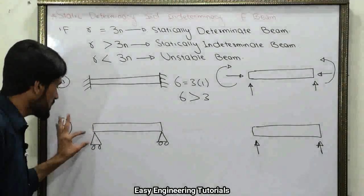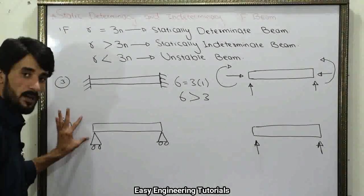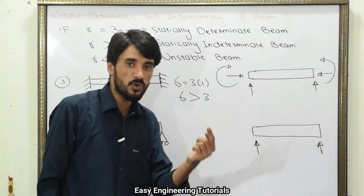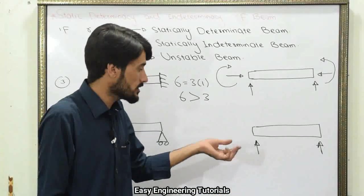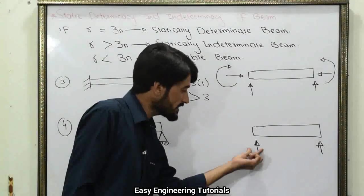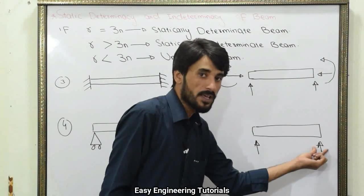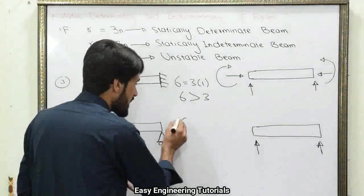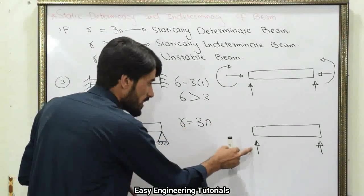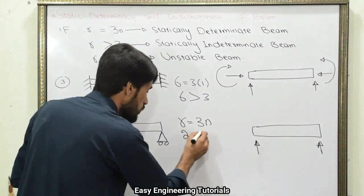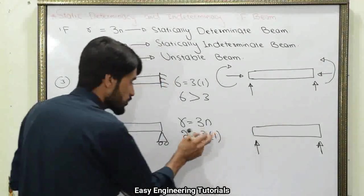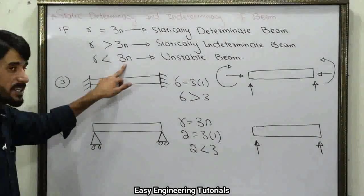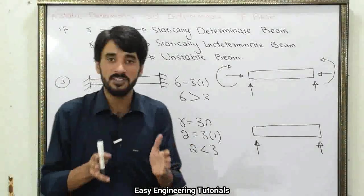Example 4: If both sides of the beam are roller supports. Roller support provides 1 unknown reaction force in the upward direction, so both sides give R = 2. N = 1, so 3N = 3. Since 2 < 3, R is less than 3N, and therefore this beam is an unstable beam.